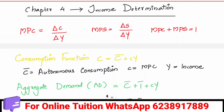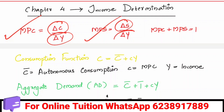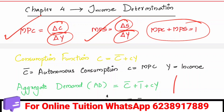In the income determination equations: MPC is marginal propensity to consume, equal to delta C by delta Y. MPS is marginal propensity to save, equal to delta S by delta Y. MPC plus MPS equals 1.